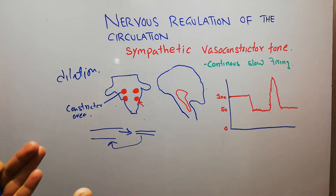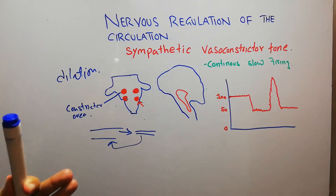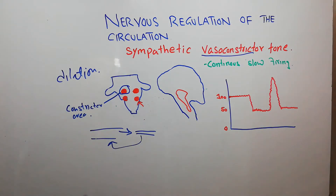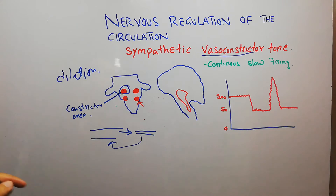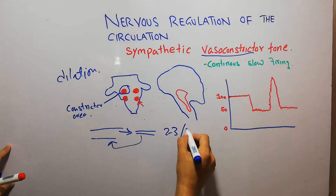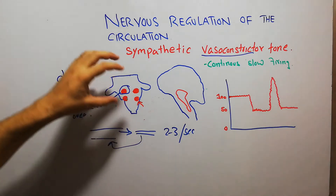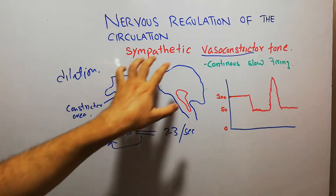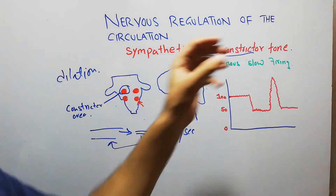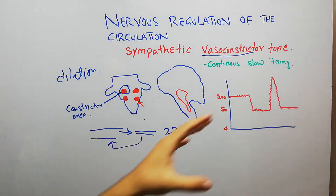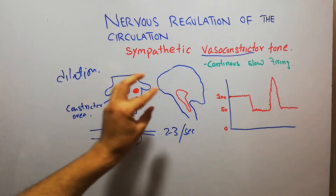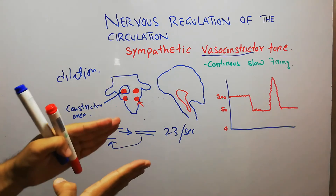Under normal circumstances, the vasoconstrictor area — the upper area — is continuously sending a few signals every second, about two to three signals per second, continuously. These continuous nerve signals are known as the sympathetic vasoconstrictor tone.